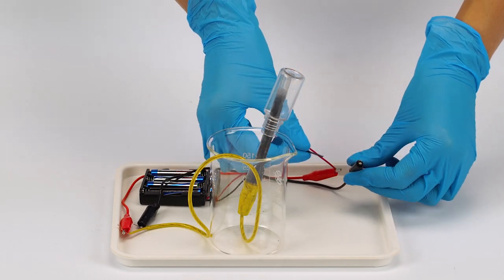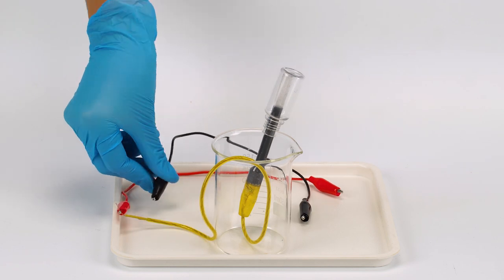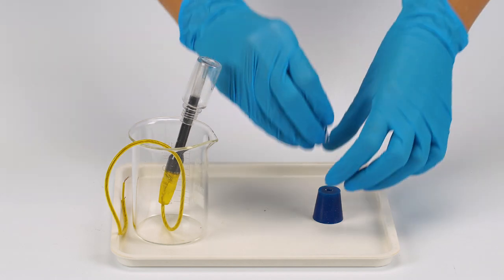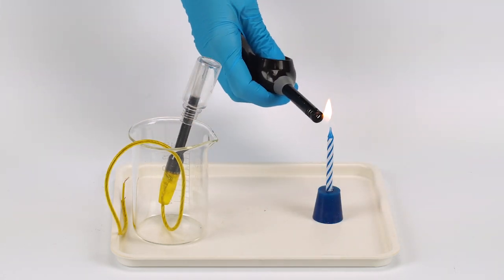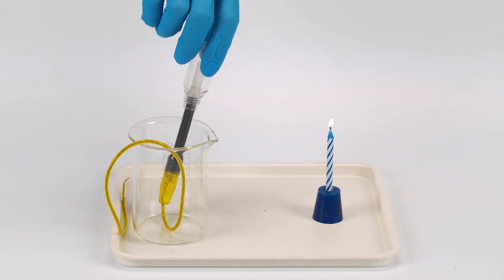Disconnect the crocodile clips from the battery holder. Now try to extinguish a candle using the reaction between hydrogen and oxygen. Put a candle in the rubber stopper with one hole. Light the candle. Take the bottle off the pipette and carefully bring it close to the candle flame.